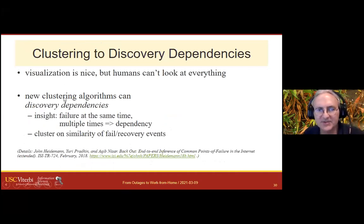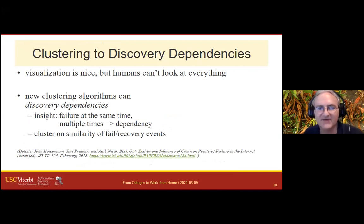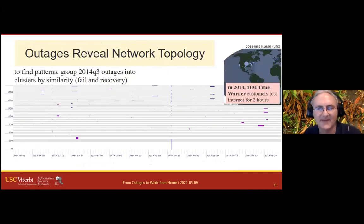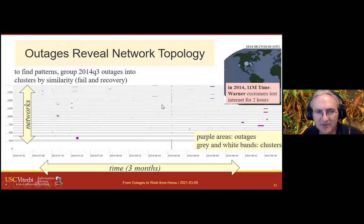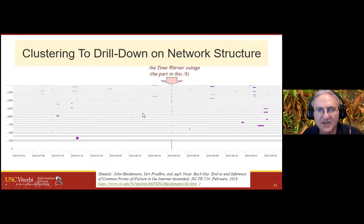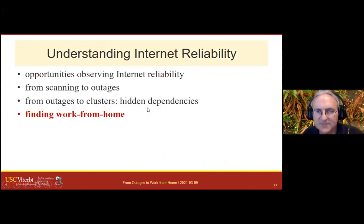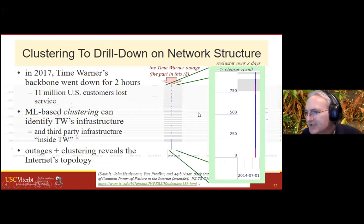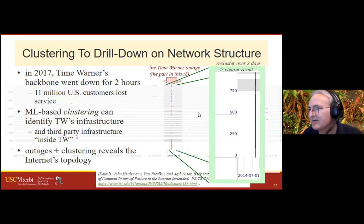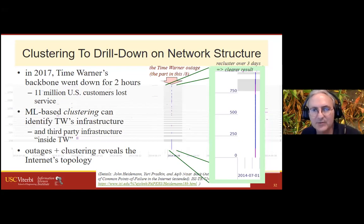My big goal with clustering is to discover dependencies — could I tell you everyone who's behind the CenturyLink internet, or everyone behind the Chinese Great Firewall? I think I can answer those questions. The Time Warner outage is visible — clustering on just the outages around those three days gives very clear clusters, which I believe is exactly the networks behind Time Warner. That's kind of cool to figure out from just a bunch of pings.